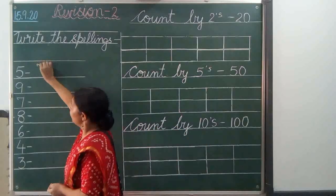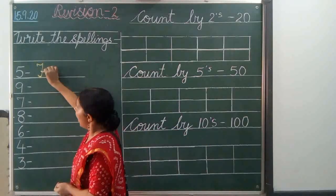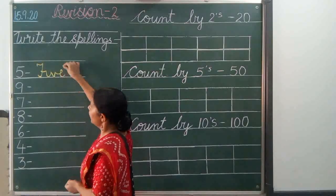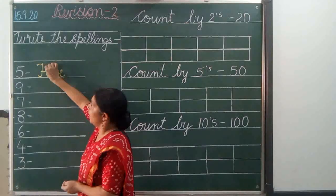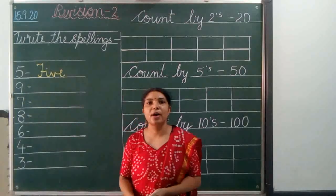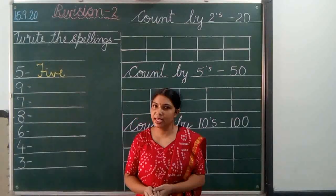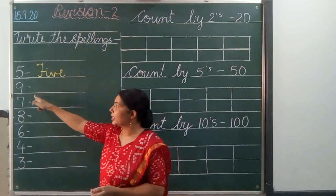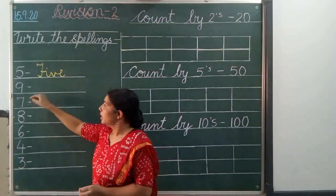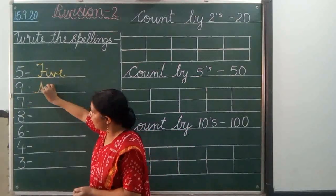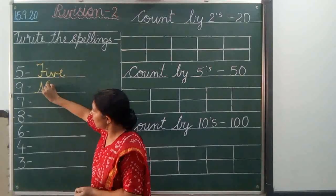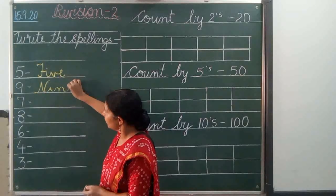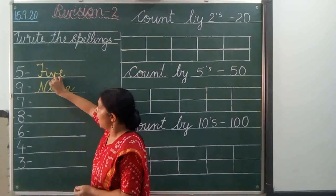F-I-V-E, 5. Now next is 9. Spelling of 9 is N-I-N-E, 9.